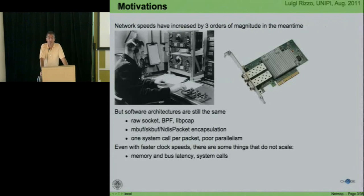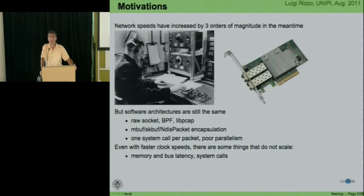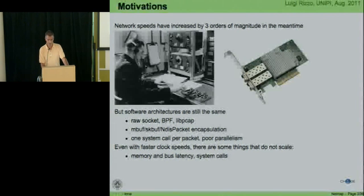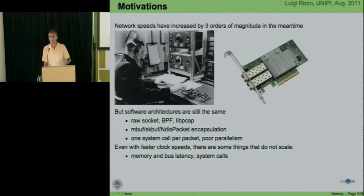The thing is, network speed over the past 30 years has increased by three orders of magnitude, whereas the architecture of operating systems has not changed. We are still using the same APIs to access network devices — raw sockets, BPF, pcap, which is a wrapper around other mechanisms. Within the kernel, we are still using wrappers around the data buffers managed by the network interface. All of this is quite expensive, and makes it very hard to cope with increased network speeds.